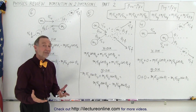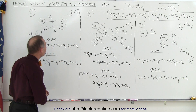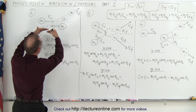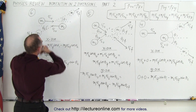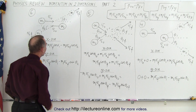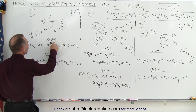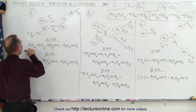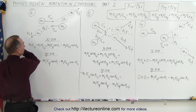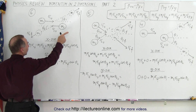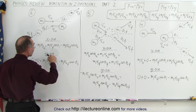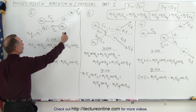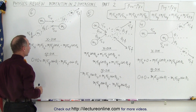The last example is where we have a glancing blow with two objects moving towards each other in the x direction. So in the x direction, we end up initially with M1 V1 because it's moving to the right, minus M2 V2 initial because it's moving to the left.